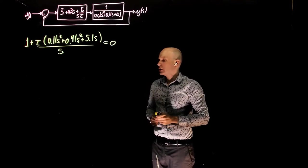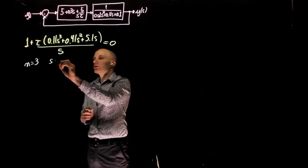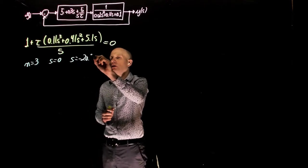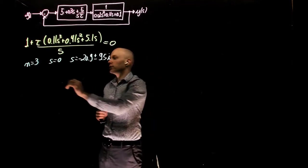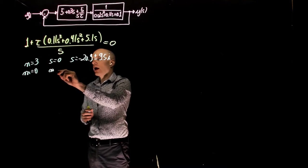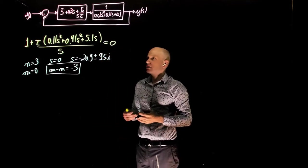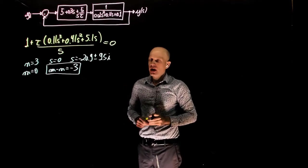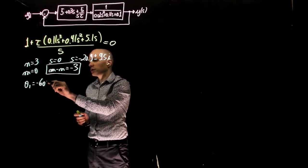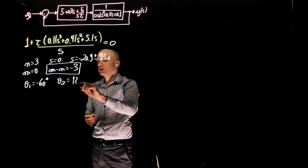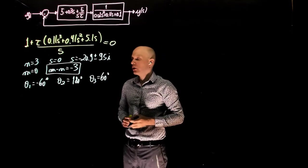From the characteristic equation in standard root locus form, we find three zeros: s equals 0, and s equals negative 20.9 plus or minus 9.5i. We find no poles, so m equals 0 and m minus n equals negative 3. With an excess of three zeros, we have three asymptotes. Their angles are theta₁ equals negative 60 degrees, theta₂ equals 100 degrees (or negative 100), and theta₃ equals 60 degrees, using the standard asymptote angle formula.